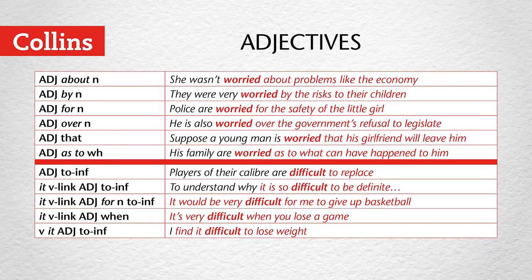We're now going to look at the patterns of two adjectives: worried and difficult. Worried can be followed by about — worried about problems — by by — worried by the risks — it can be followed by for — worried for the safety of the little girl — or over — worried over the government's refusal.